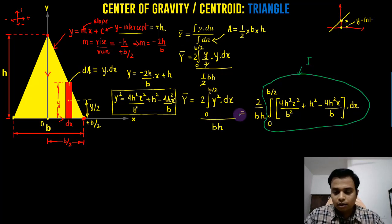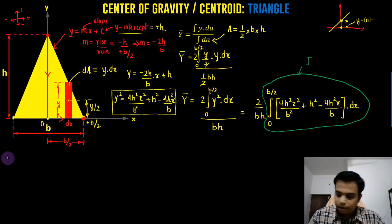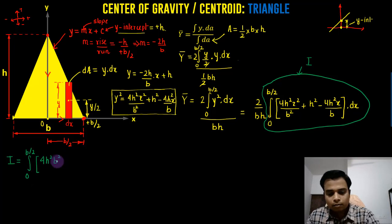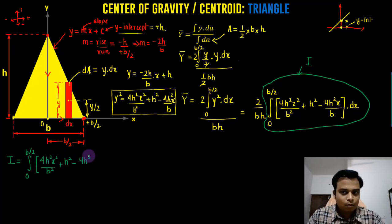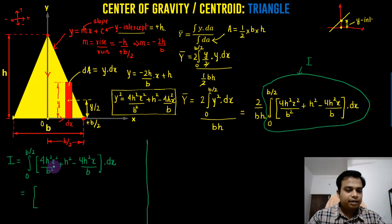So 2 over bh into I will give you the y coordinate of the centroid. Now, that's going to be very easy for us. So let's kick off and let's try to solve this integral. So let me start over here. Make some space. So I is equal to, let me write it again. Now, let's start integrating.